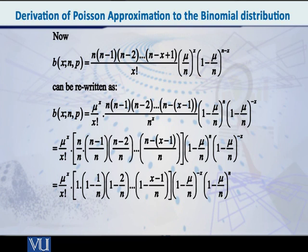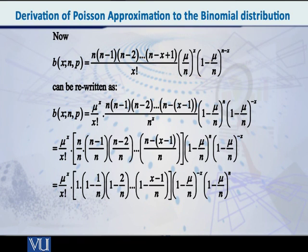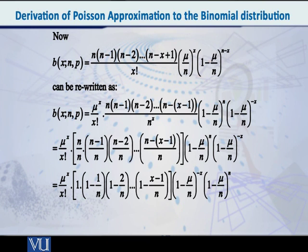Now look at the terms in the numerator — students, they are also exactly x terms. How do I say that? Look: the first term is n. Then n minus 1, n minus 2, and so on up to n minus x minus 1. The number of those minus terms is x minus 1, and that first n is the x-th term — so there are x terms on top and x terms on the bottom. So combine them: n by n, n minus 1 by n, n minus 2 by n, and so on up to n minus x minus 1 by n. Write the rest the same way as before. And there is one more step.